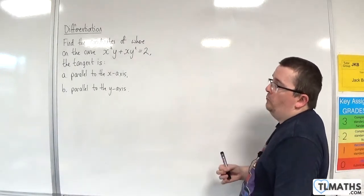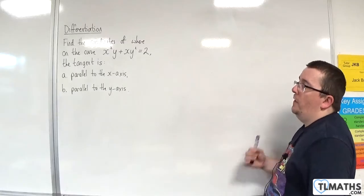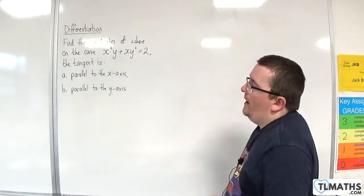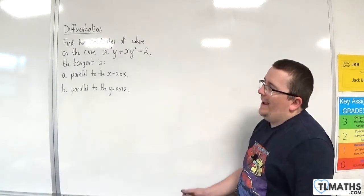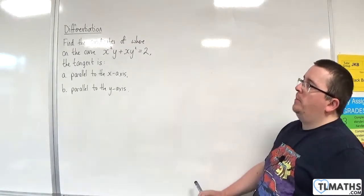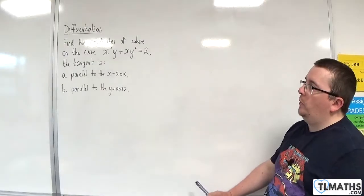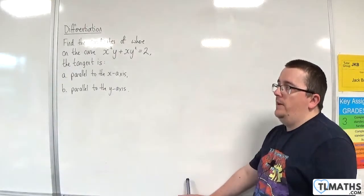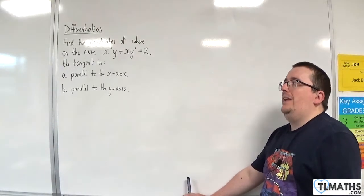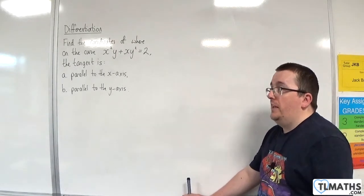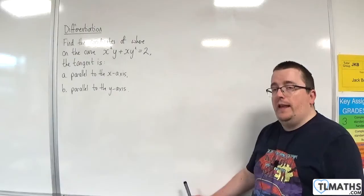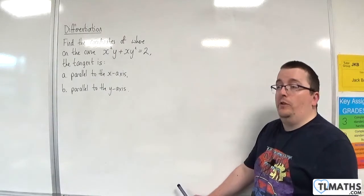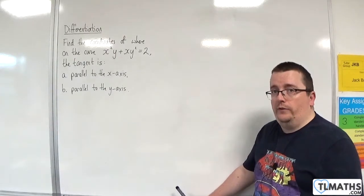In this video, I'm going to work through this problem: find the coordinates of where on the curve x squared y plus x y squared equals 2, the tangent is, firstly, parallel to the x-axis, and then parallel to the y-axis.